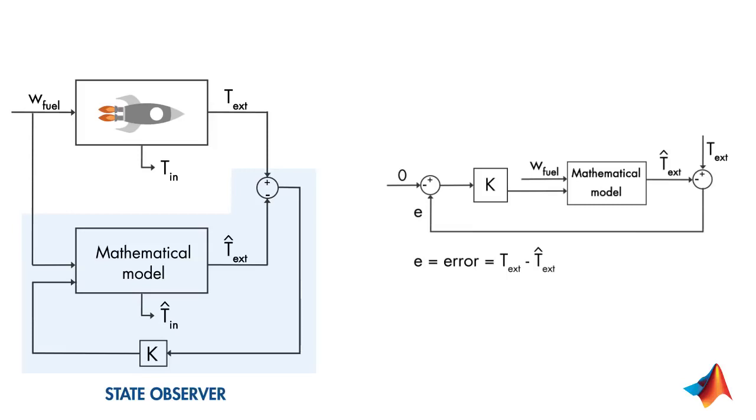In summary, you can't directly measure the internal engine temperature, but you know how much fuel you're supplying to your rocket, so you can run this through your mathematical model and estimate the output, which you can then use along with your real measurement to estimate the internal state of the system. The question is how to choose the controller K such that the error between the measured and estimated external temperature is minimized optimally. We'll provide more insights into this in the next videos where we'll discuss how Kalman filters work.